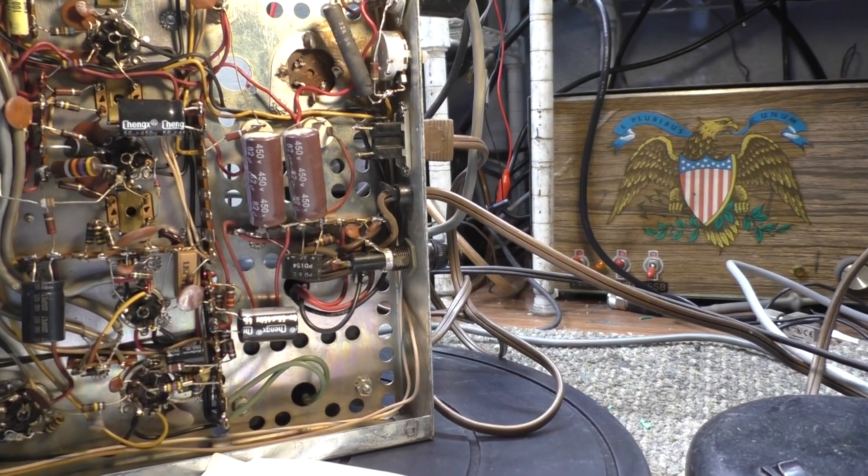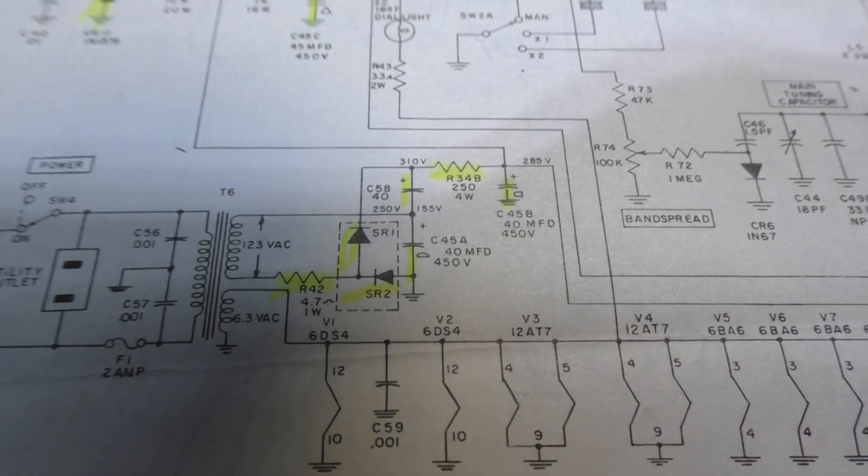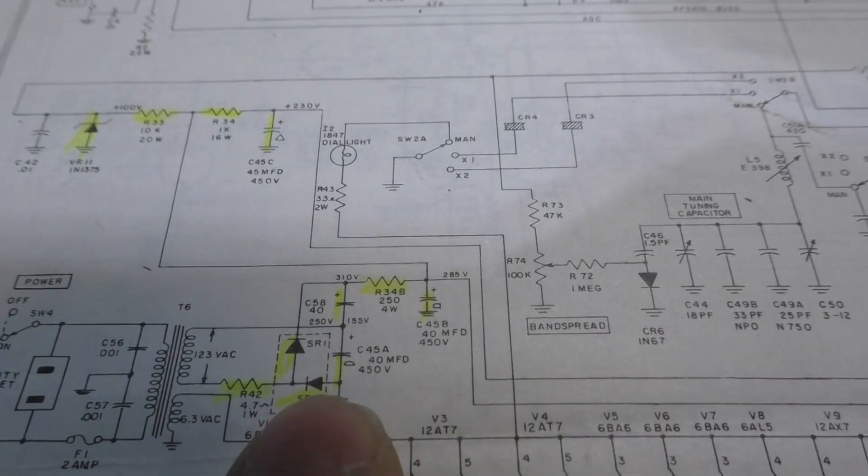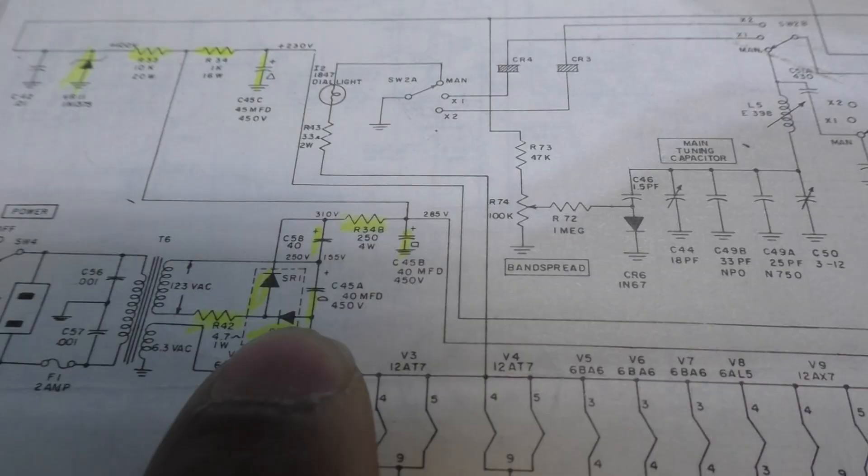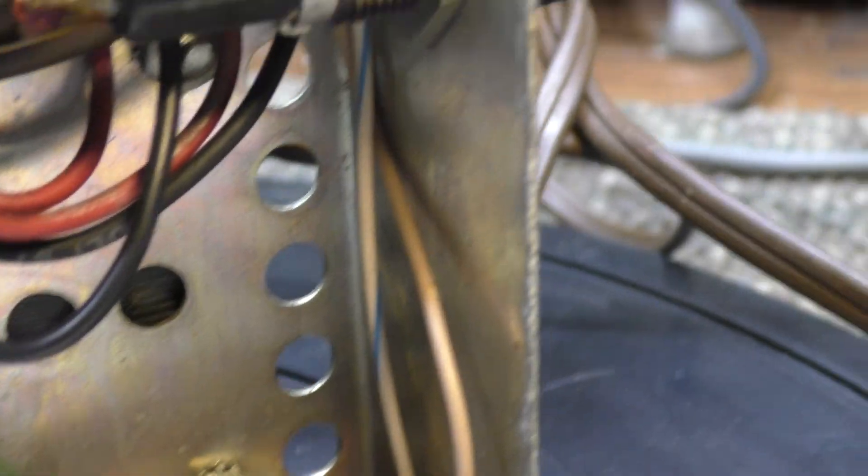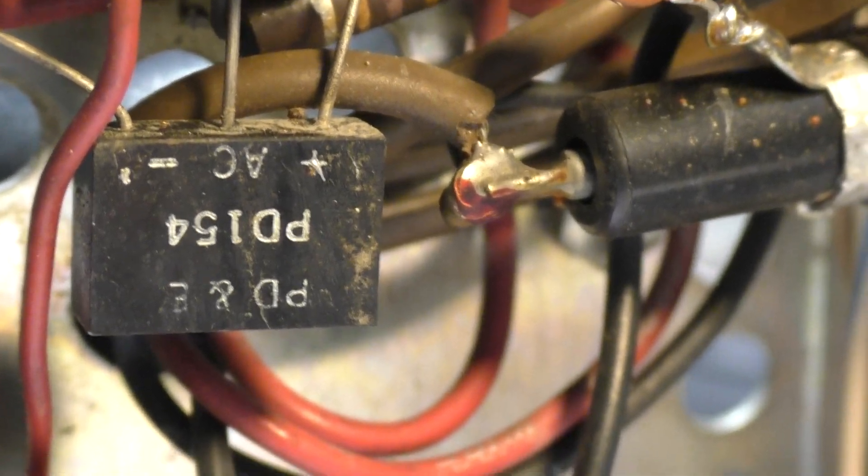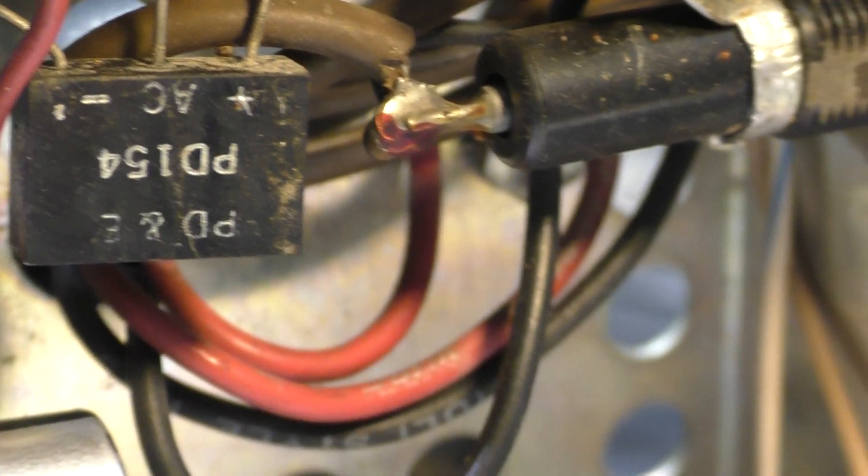Some of the common problems with the Mark 3 are related to the power supply. Looking at the schematic here, I kind of yellowed some of the things that are the common problems. This is the high voltage power supply, uses a voltage doubler with two diodes here, which is actually in one case. That PD 154, that there is just two diodes in one case.